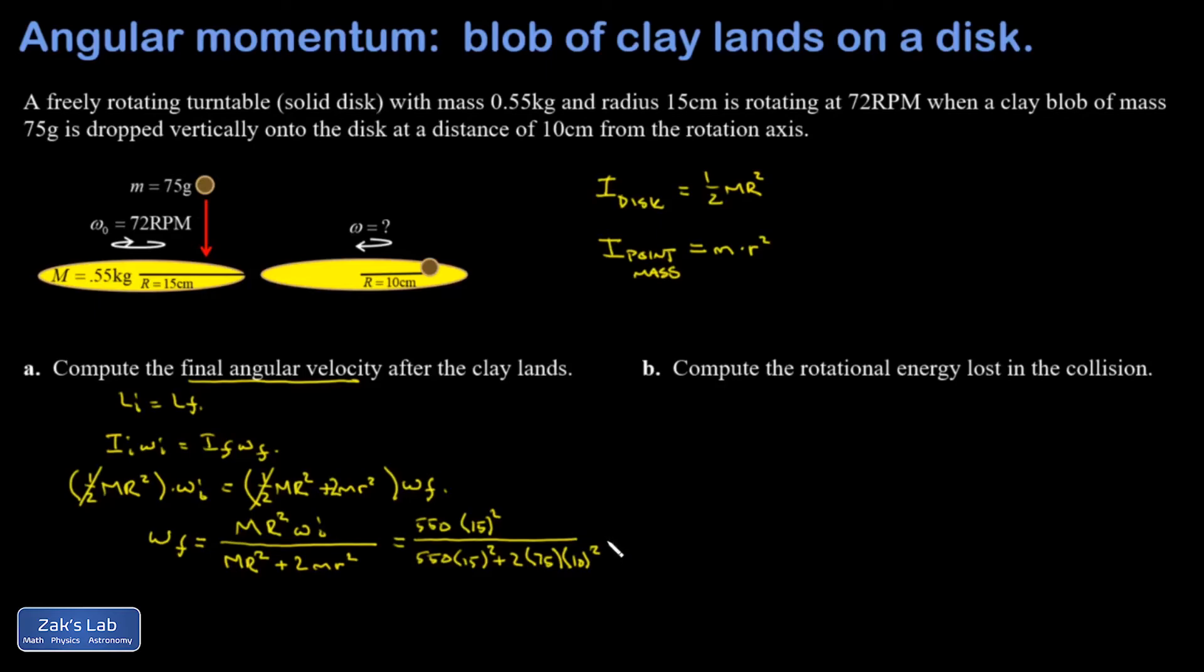Now, if I plug in my initial angular velocity in rotations per minute, so times 72 rotations per minute, that's the only surviving unit. So my final velocity will come out in rotations per minute. And I end up, after smashing the numbers with 64.2 rotations per minute, and it's nice to have those units because it allows us to qualitatively compare with what we started with. So it's a slowdown of a considerable percentage, but not dramatic.